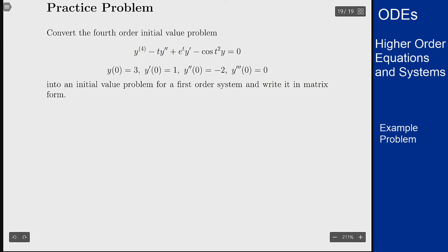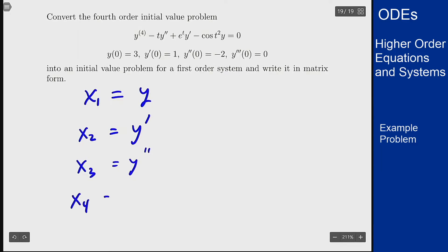So I'll have x1 just being the variable y in this equation, x2 is going to be the derivative of y, x3 will be y double prime, x4 will be y triple prime, and why don't I need an x5?